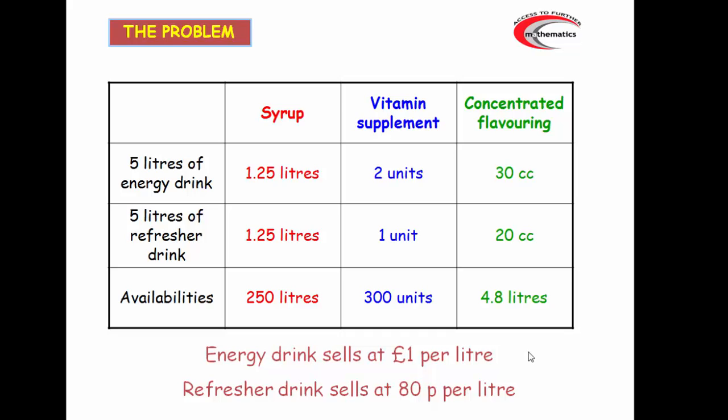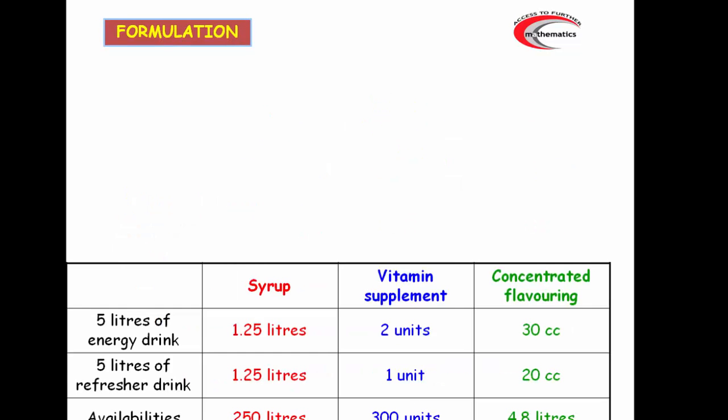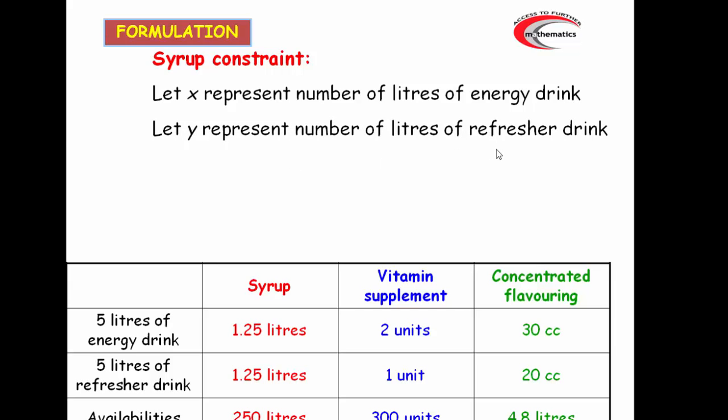So our decision variables would be the first step. We'll let x represent the number of litres of energy drink and y represent the number of litres of refresher drink. That's the decision that's being made, how much of each drink to make.